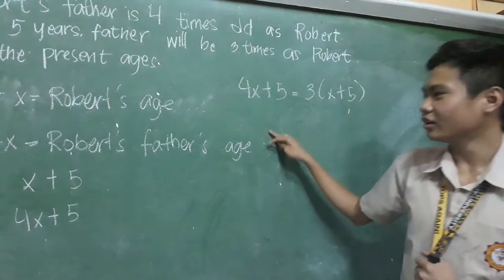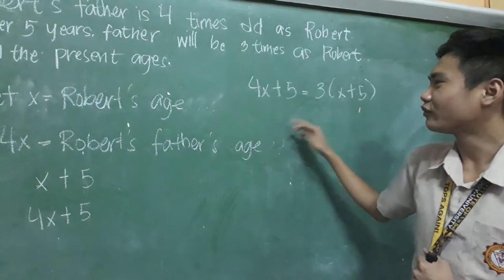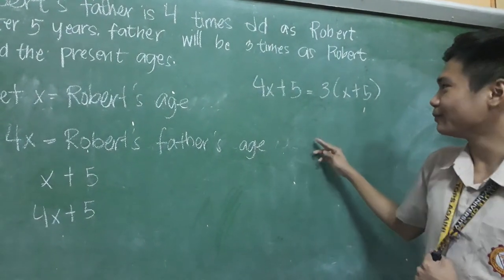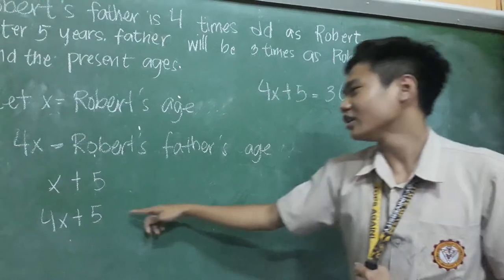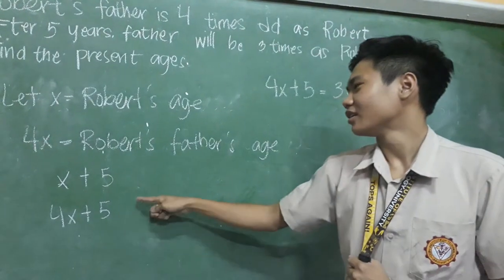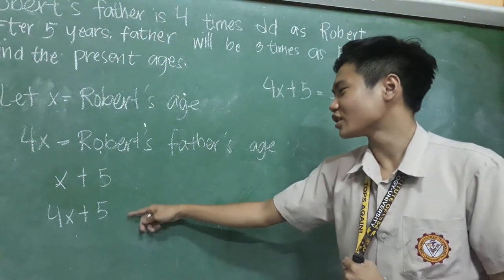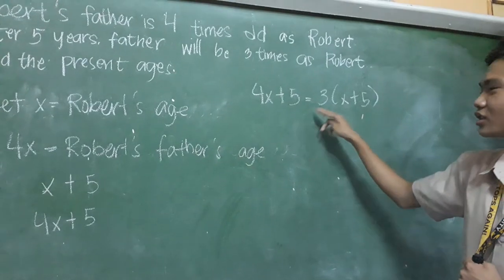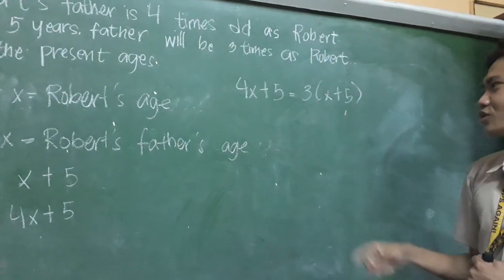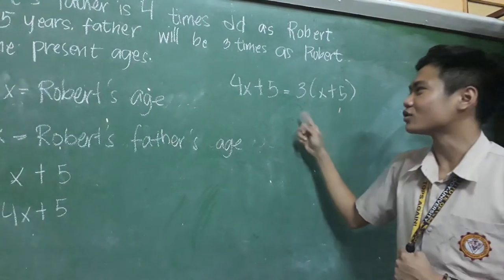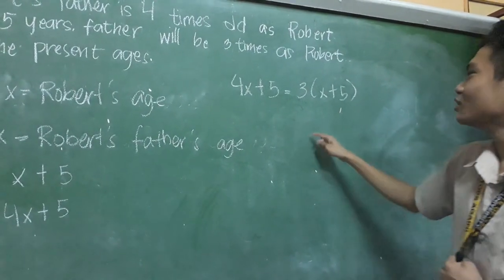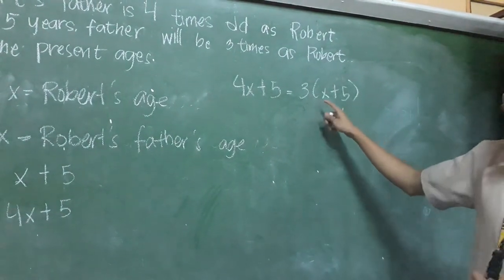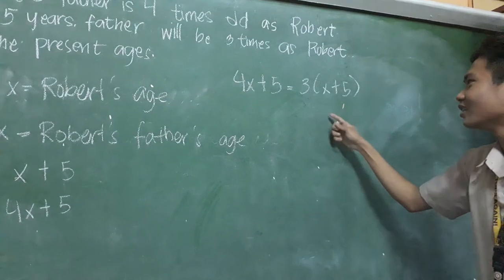Then in five years of time, we take Robert's father's age in five years, so it is just equal. So now we need to solve this.